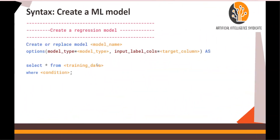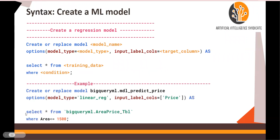In the previous video, this was the syntax that you would need to follow to write a machine learning regression model in BigQuery: 'CREATE OR REPLACE MODEL', followed by the name of the model. Then options — model_type. As we are writing a linear regression, you would write 'linear_reg'. Target variable — for now, we are going to predict price. And then we write the SELECT statement for training the model.